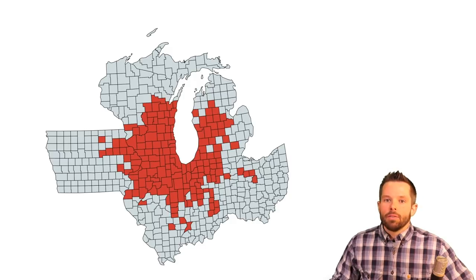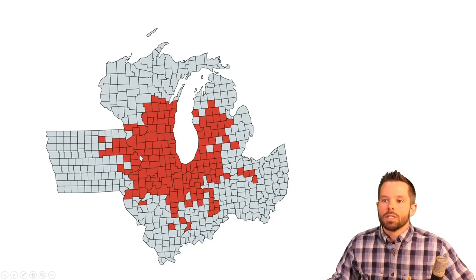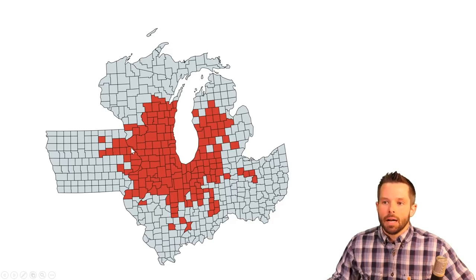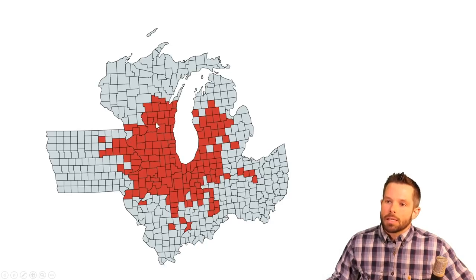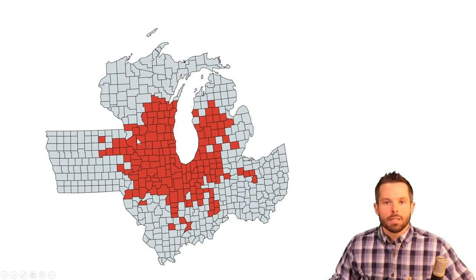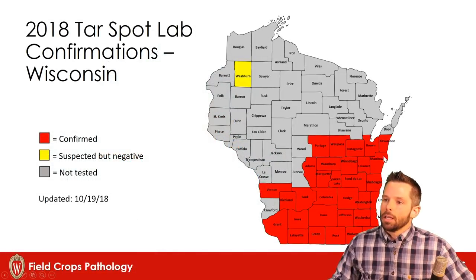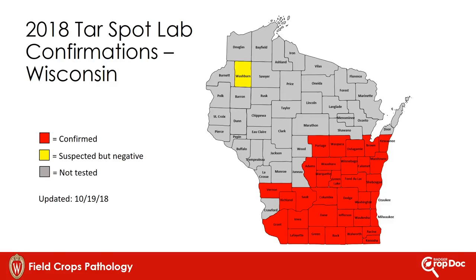In 2018, we have confirmations of where tar spot was actually found in the upper Midwest. Focusing on Wisconsin, most of the major corn belt was affected — we identified at least one field with tar spot present. The majority of the epidemic started in the southwestern part of the state in Grant, Lafayette, and Iowa County — that was the epicenter. It then moved from southwest to northeast towards the Green Bay area, with less severity up there. These county confirmations came from my lab, the state pathology lab, or our diagnostic clinic on campus.